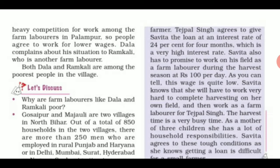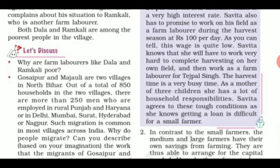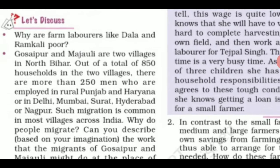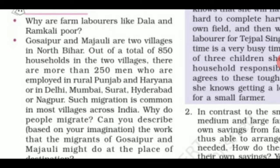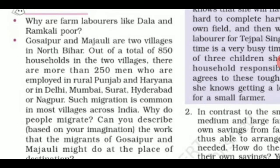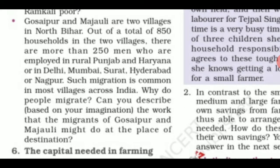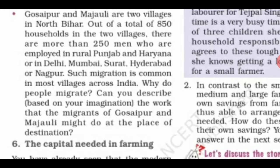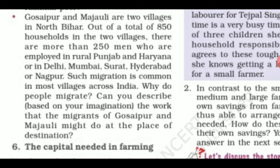Now on your screen there is a purple color box. In your purple color box there is a story given related to the various conditions which used to prevail in the village Pallampur. On the left side of the screen there is a question given: Why are farm laborers like Dala and Ramkali poor? Because there were no sufficient funds and they could not perform their farming activities in a proper way.